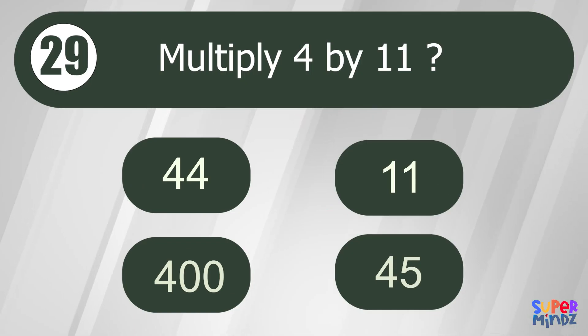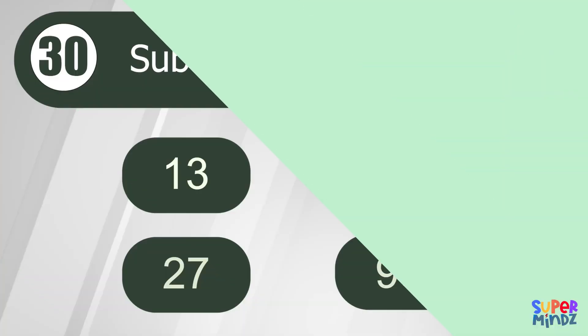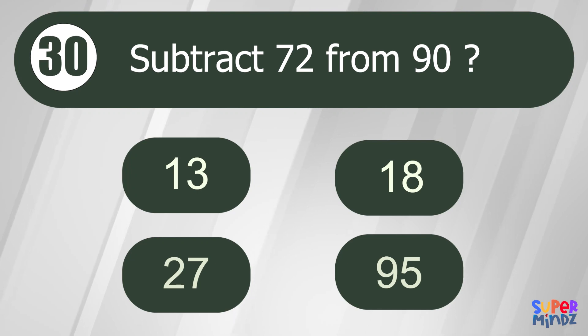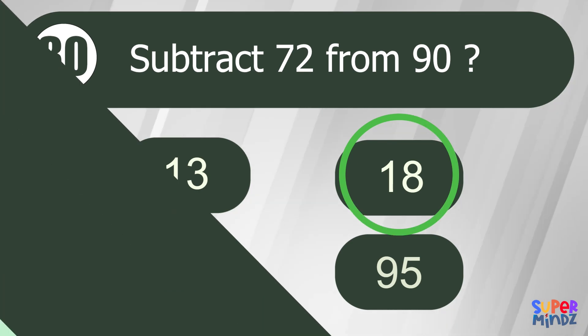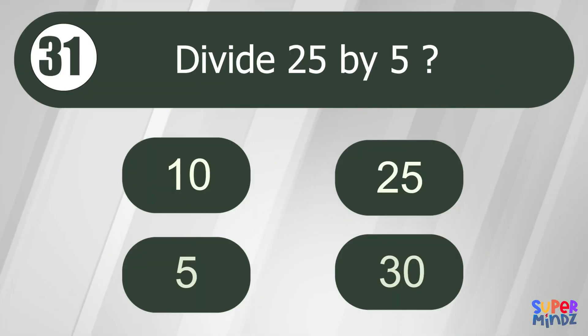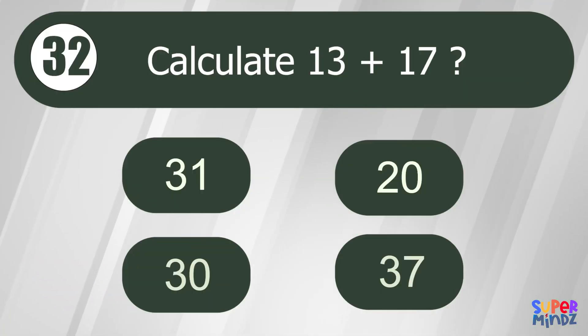Multiply 4 by 11. 44. Subtract 72 from 90. 18. Divide 25 by 5. 5. Calculate 13 plus 17. 30.